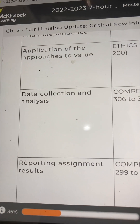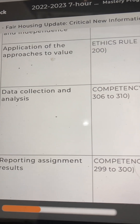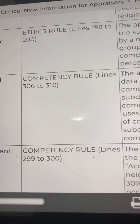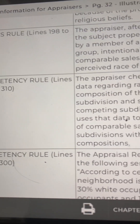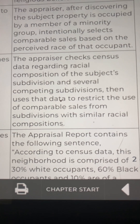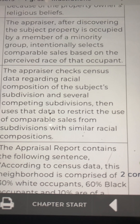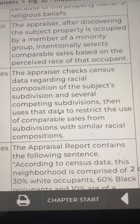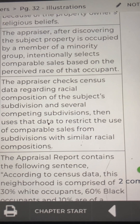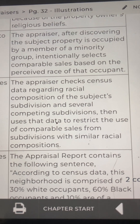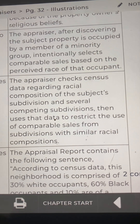The next step is data collection and analysis. The USPAP reference is the Competency Rule, lines 306 to 310. An example: the appraiser checks census data regarding racial composition of the subject's subdivision and several competing subdivisions, then uses that data to restrict the use of comparable sales from subdivisions with similar racial compositions.